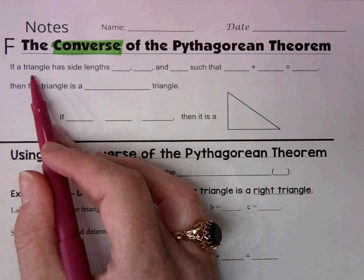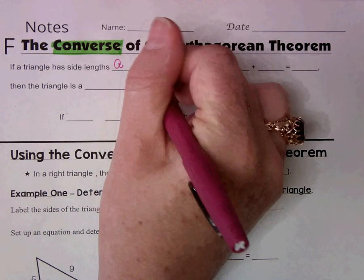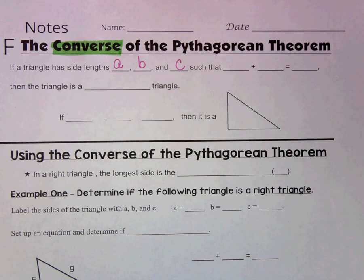So this is what the converse says. It says if a right triangle has side lengths of A, B, and C, right? We know the side lengths are called A, B, and C.